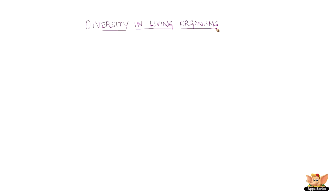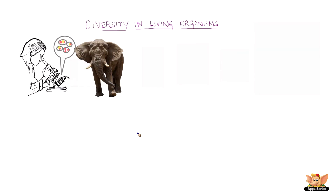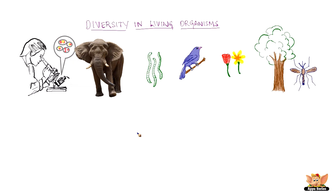Diversity in Living Organisms. We find lots of life forms around us, and each organism is different from all others to a lesser or greater extent. It could be difference in height and size — microscopic like bacteria or macroscopic like a huge elephant. Or difference in color, colorless like a transparent worm to brightly colored like birds and flowers. Or even life span, thousands of years like pine trees to a few days like a mosquito.